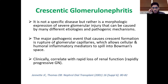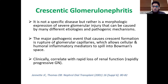Rupture allows cellular and humoral inflammatory mediators to spill into Bowman's space. Clinically, this correlates with rapidly progressive glomerulonephritis, or RPGN, and its clinical counterpart, which presents in pathology as crescent formation.